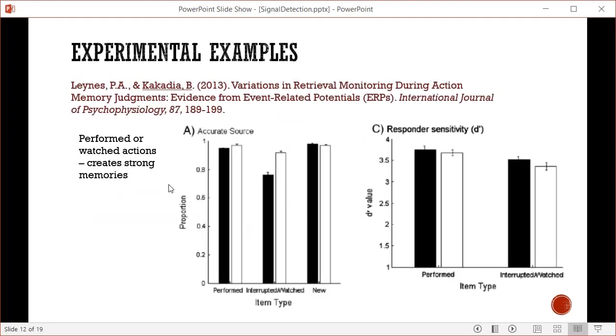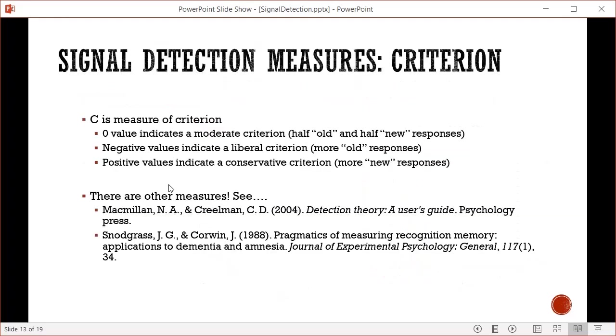In contrast, my student Bhavika Kakadia and I looked at memory for actions, which creates really strong memories. Here you see a graph of accuracy - they were highly accurate, even for source. The D prime values are much larger, well above 3.5 compared to 0.75 in the other study. This is a really huge D prime and shows how D prime can vary depending on encoding strength.